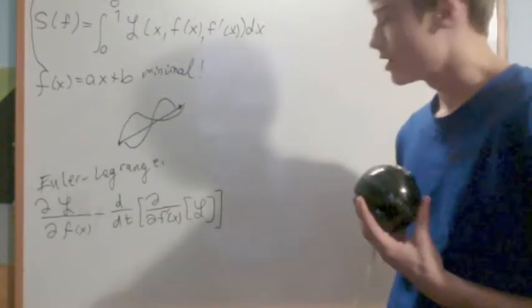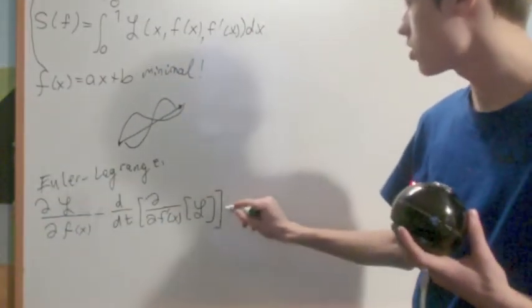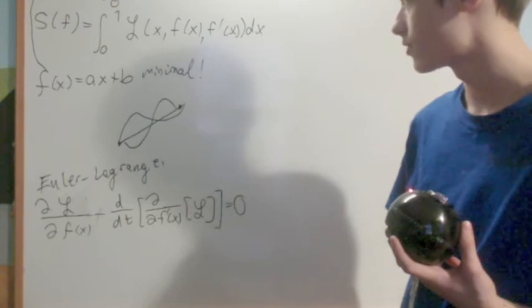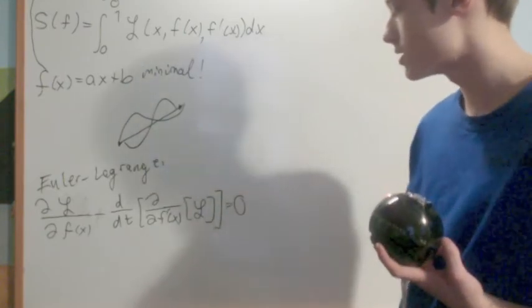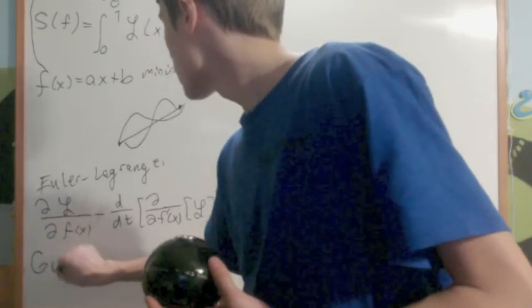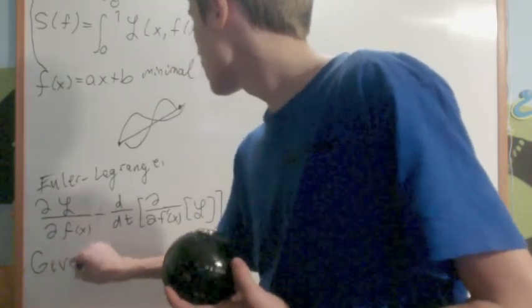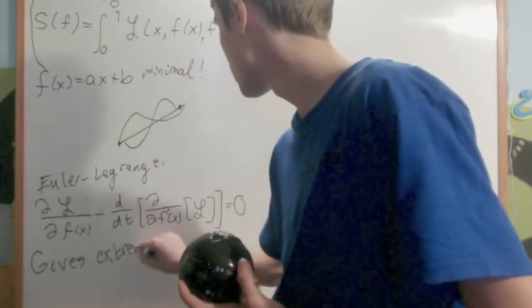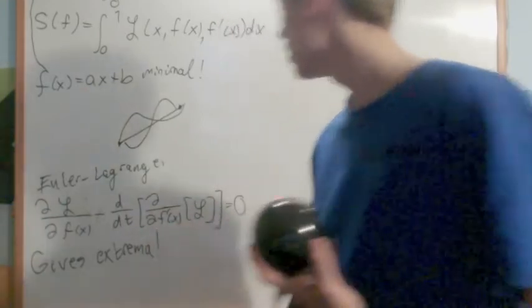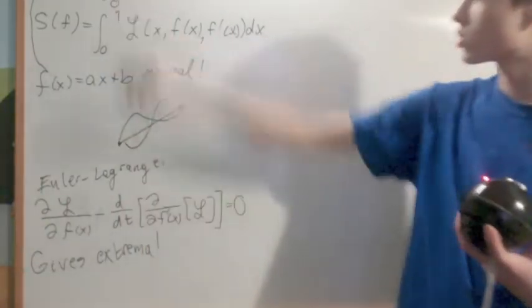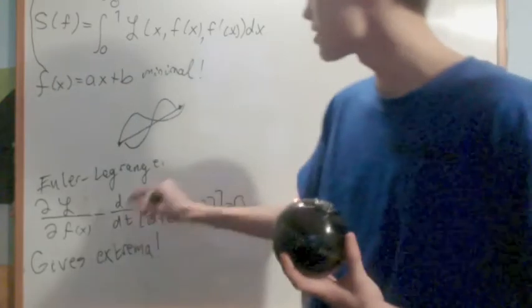What you have to do is solve the Euler-Lagrange equation. If you do that, it will give you the extrema — the things that extremize S.